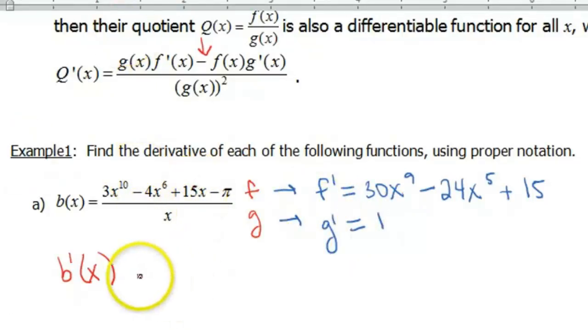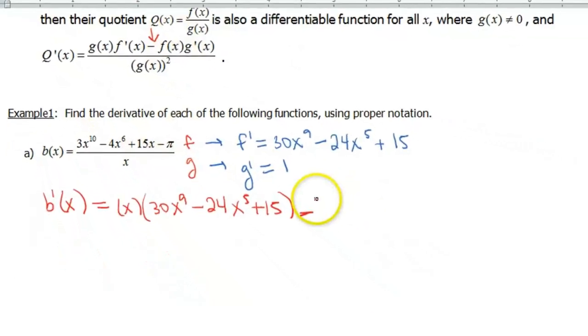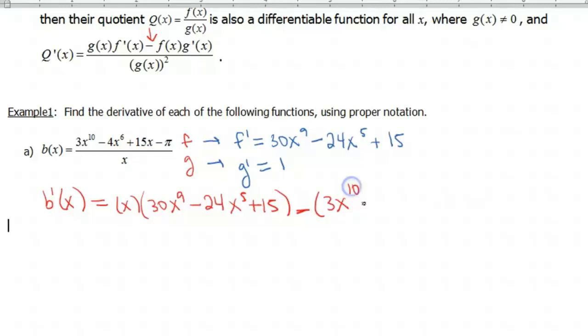Okay, so putting those pieces together then into our formula for the quotient rule, g(x). So that means we're gonna take x, multiply it by f'. So f' is this polynomial that we found over here. 30x^9, minus 24x^5, plus 15, minus. Okay. f, that was our original function in the numerator.